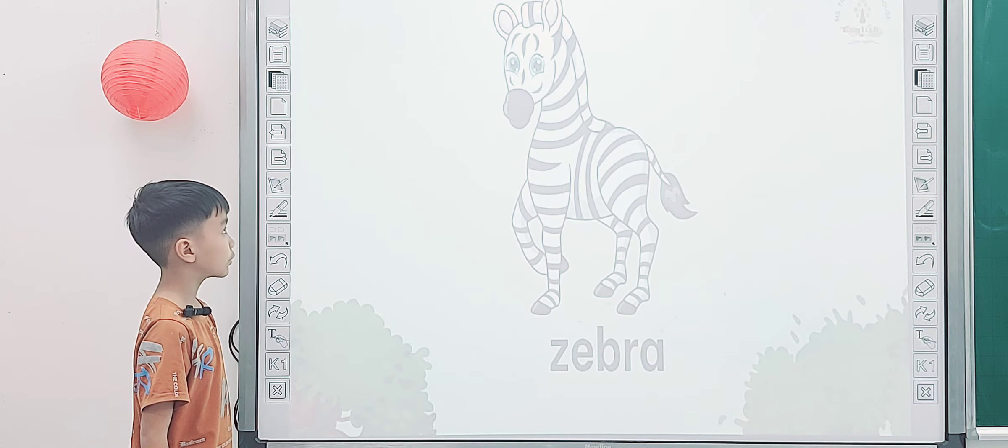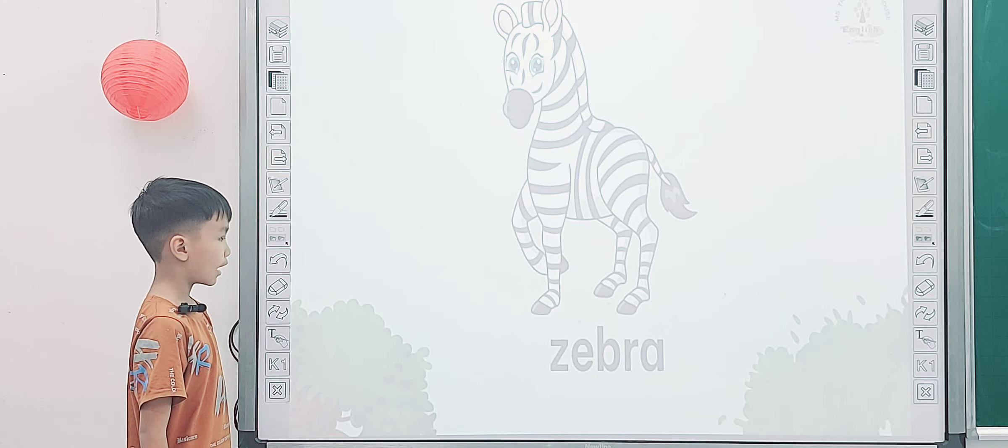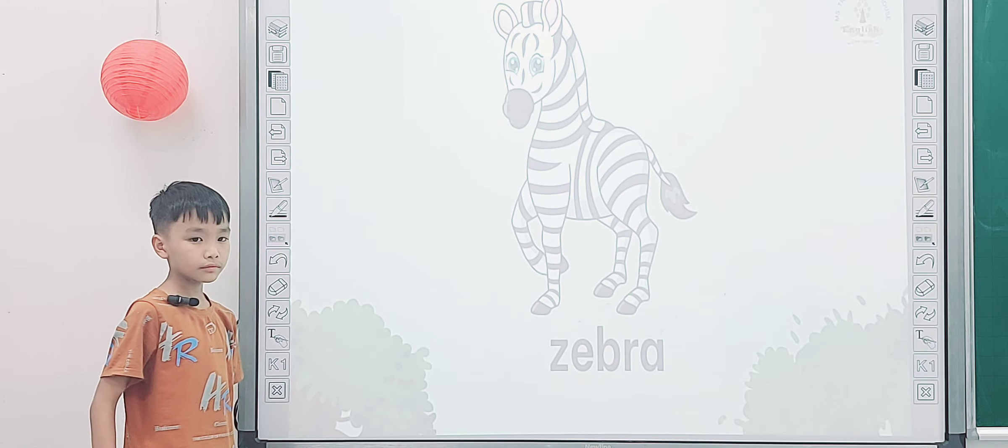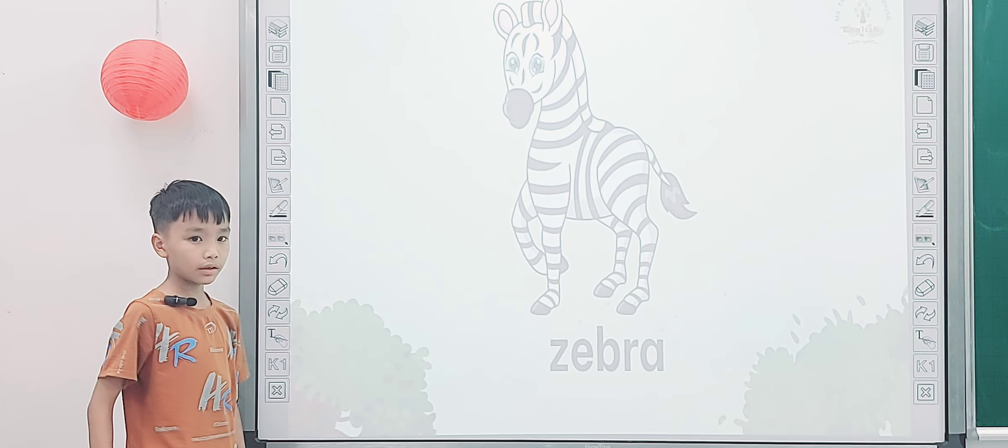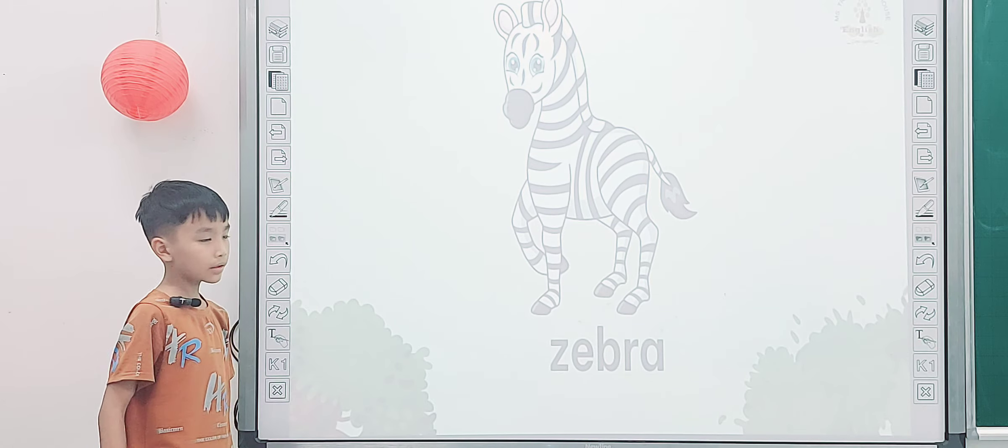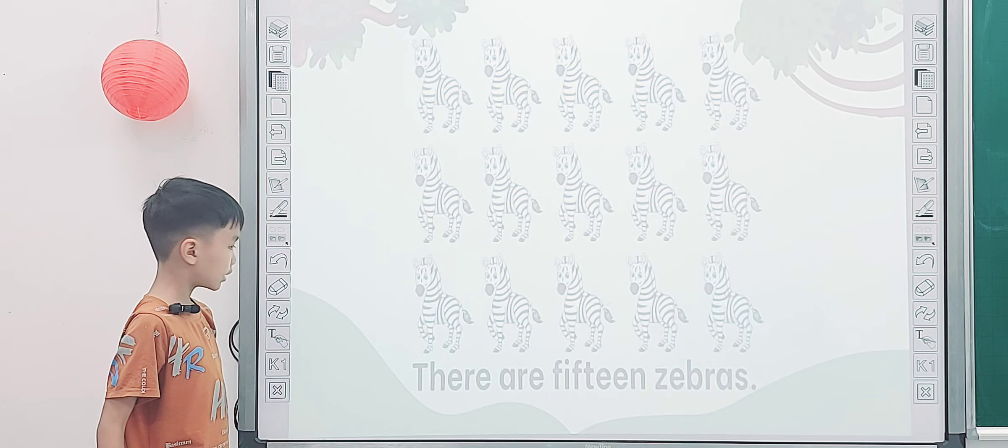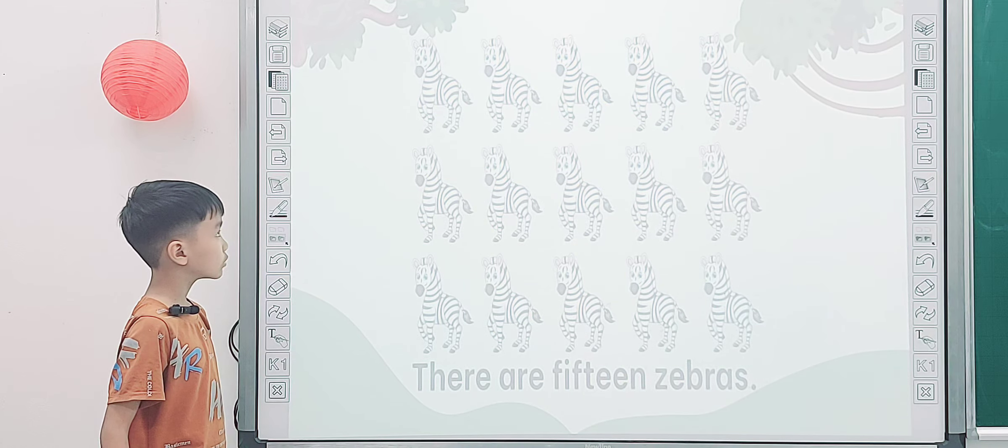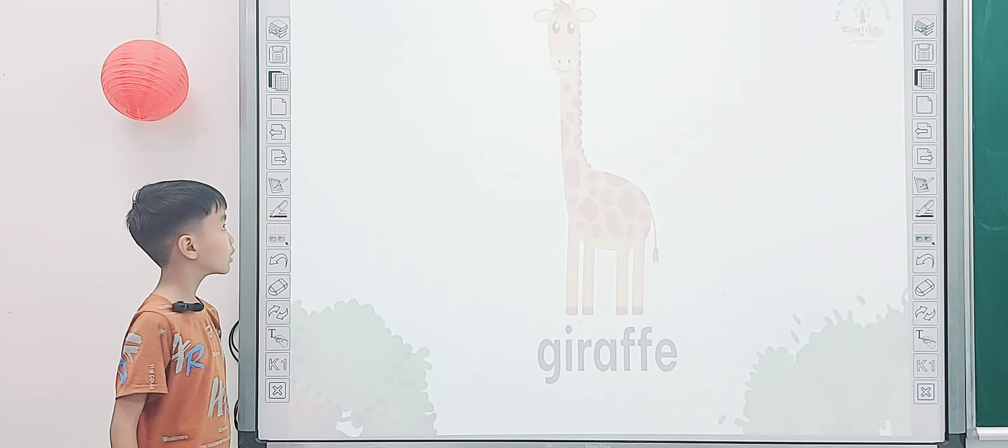And what is it? Zebra. And what color is the zebra? It is black and white. Yeah, very good. So tell me, how many zebras are there? There are 15 zebras. Yeah, very good.